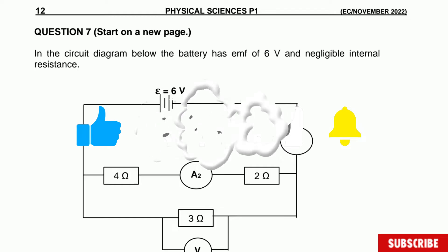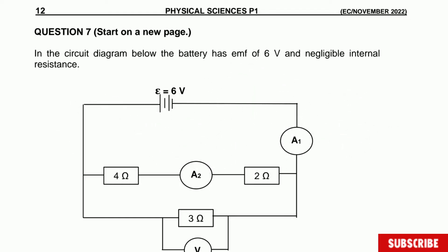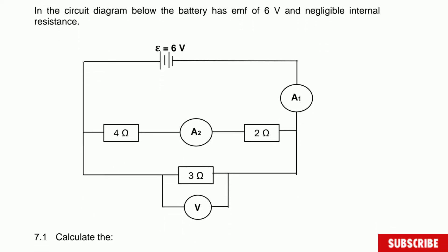The question says: in the circuit diagram below, the battery has an EMF of 6 volts and negligible internal resistance. The 4 and 2 ohms resistors are connected in series, but they are connected in parallel to the 3 ohms. And then there are 2 ammeters and 1 voltmeter.